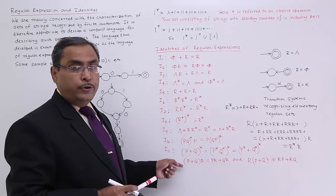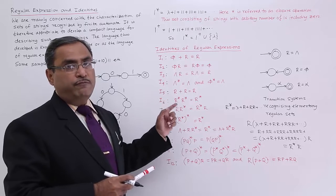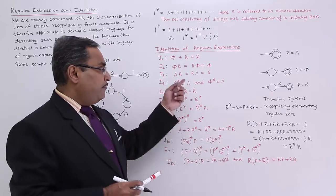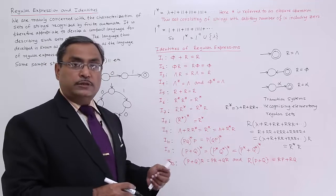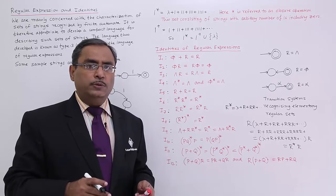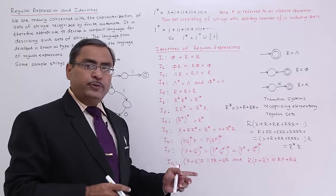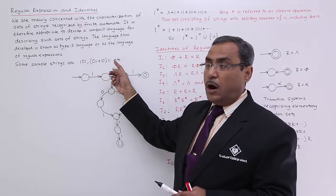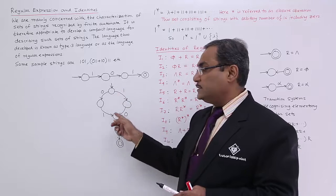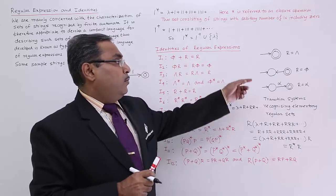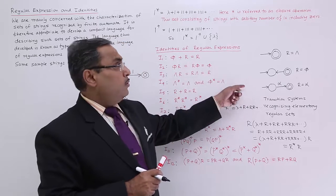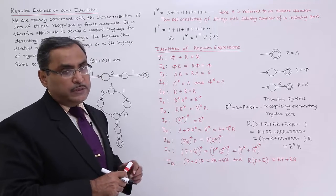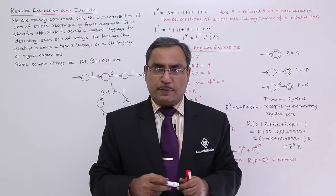You should remember all of them. We know the meaning of plus, we know the meaning of phi, we know the meaning of lambda, and we know the meaning of writing two regular expressions side by side. Now, these 12 identities must be remembered because in the next videos, so many problems will be solved using them. What is a regular expression? What are the strings? How can strings be expressed using a transition system with finite automata? What are the elementary regular sets? What is 1 star? What is 1 plus? What are the Boolean identities? We have discussed all these issues in this session. Thanks for watching.